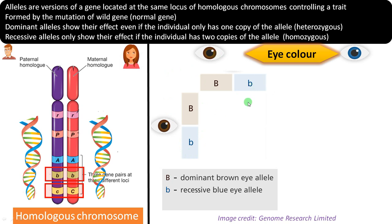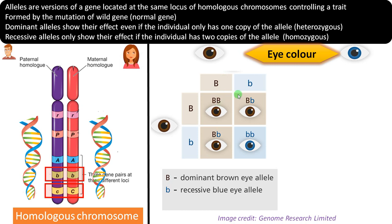These two gametes from the father and these two gametes from the mother give offspring: capital B capital B, capital B small b, capital B small b, and small b small b. A dominant allele is one that will express even in the presence of a single copy. In heterozygous condition, the dominant allele will express; in other words, it masks the expression of the recessive allele. A single copy is required for a dominant allele to show its effect, whereas two copies are required for the recessive allele.